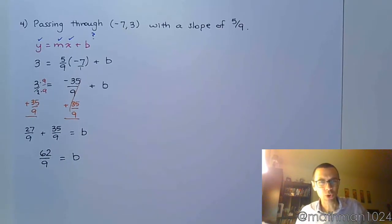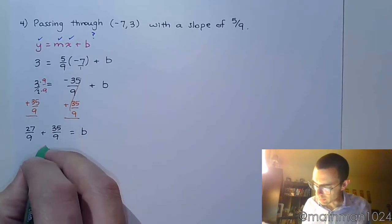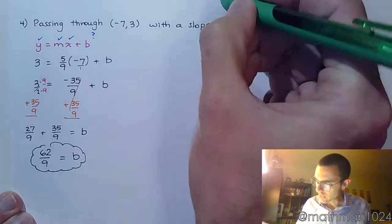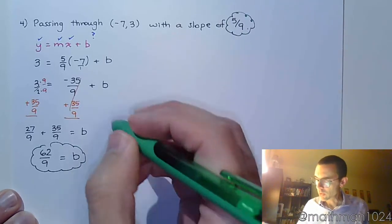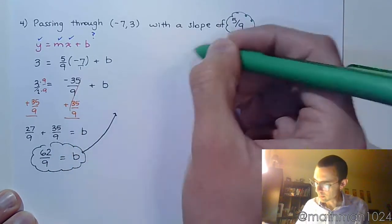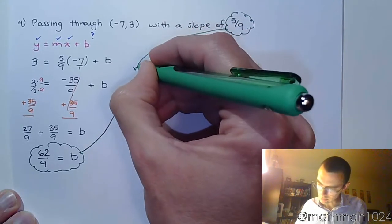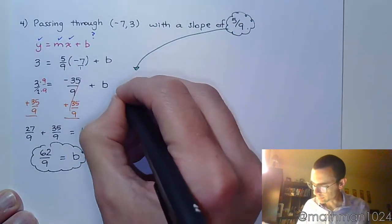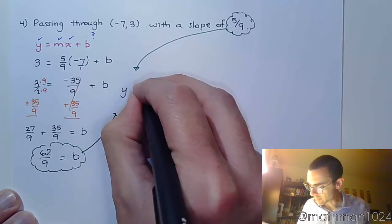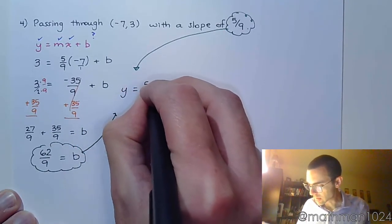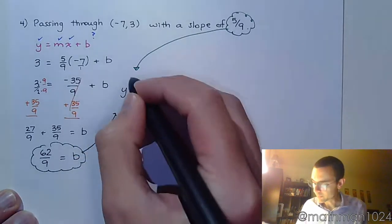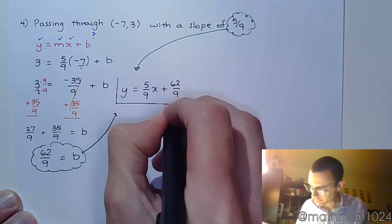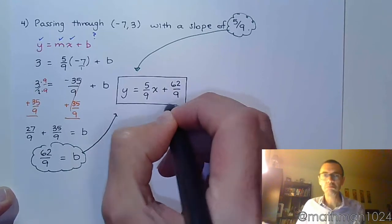27 and 35 is 62 over 9. Alright. So really, you've just got to work with fractions. And remember, fractions are just numbers. I have my b value right here. And I have my slope right there. So that means when these guys come together, I have the equation y is equal to 5 ninths x plus 62 over 9. Like that. So there you go.